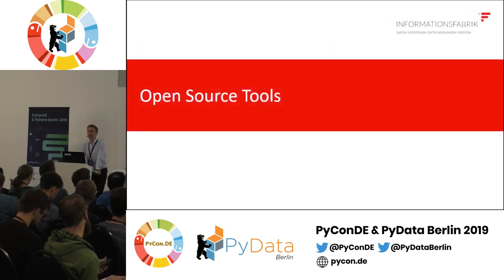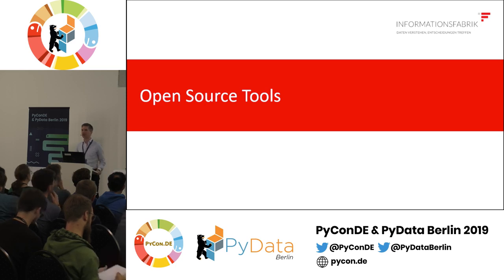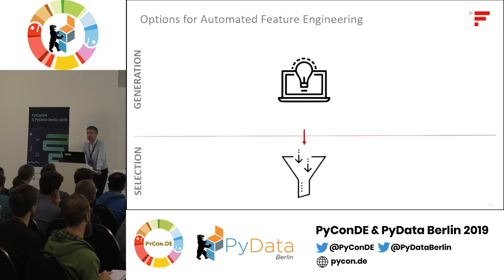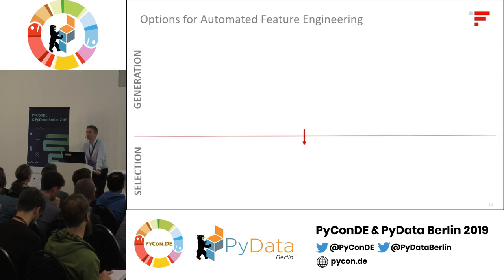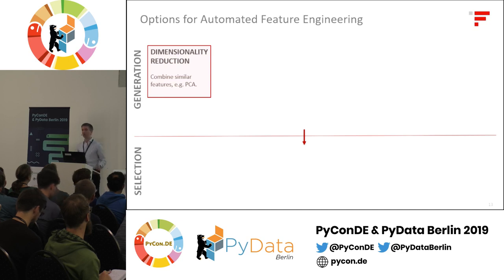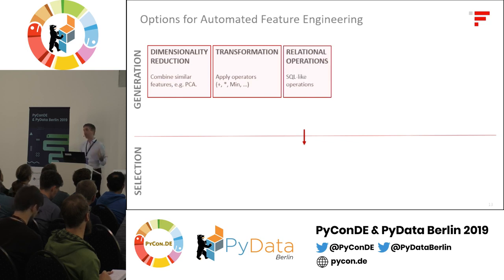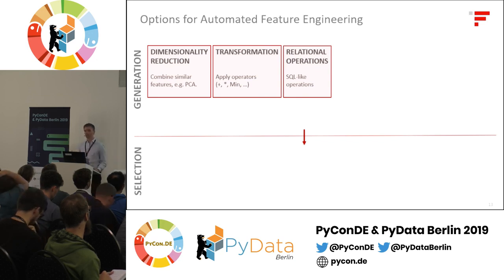Now let's look at popular tools. In general, tools for automated feature engineering do two things: first they generate features — potentially good features — and then they select down the best ones. For generation, popular methods include dimensionality reduction such as PCA, transformations like combining features or polynomial features, and relational operations — if your data is spread across different tables, SQL-like operations can combine them to generate features.